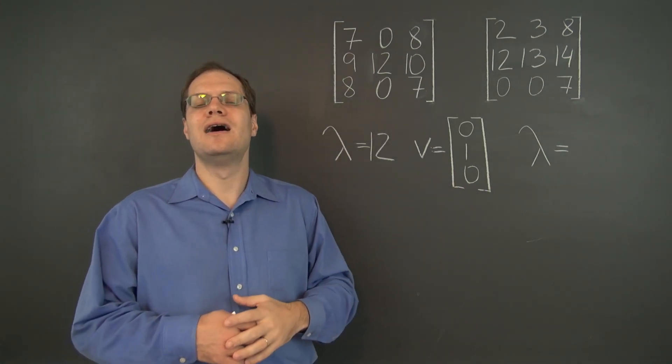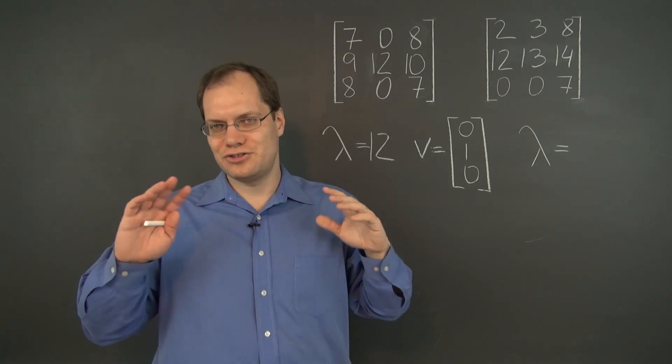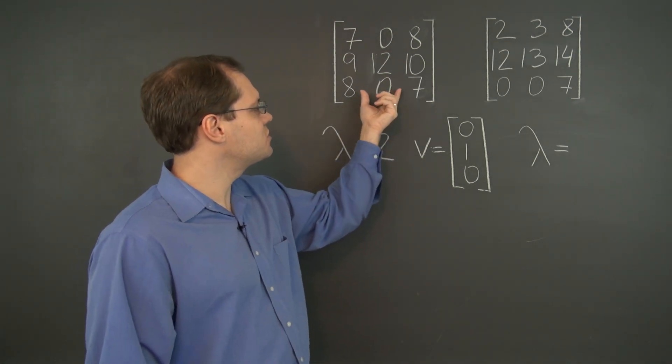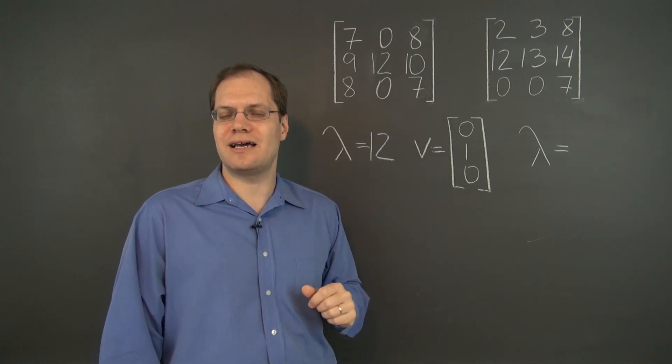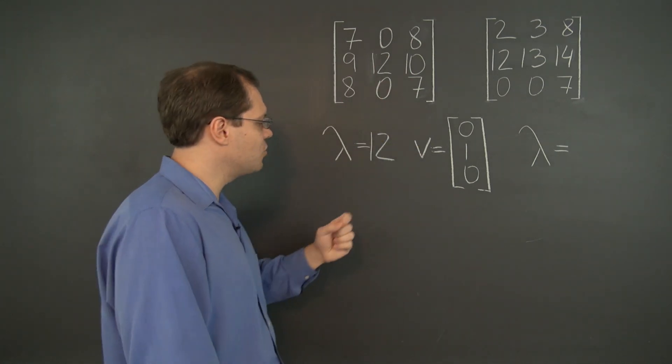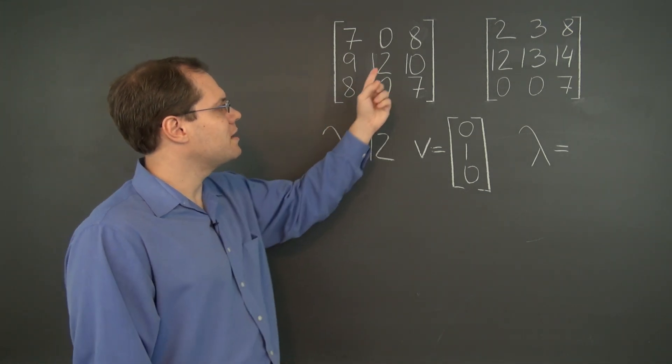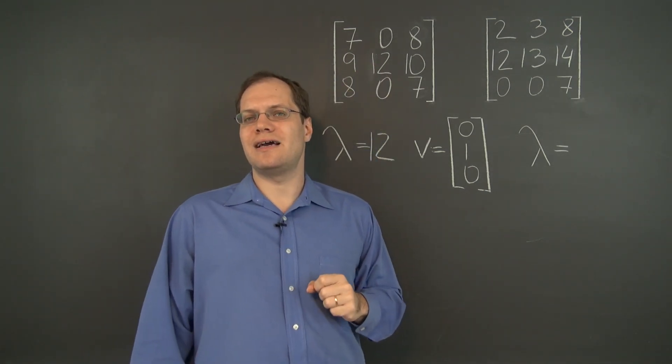So whenever you have a matrix, no matter how full of values that you don't care about it is, if you just pick out one column in which the non-zero entry appears on the diagonal, that tells you an eigenvector and the corresponding eigenvalue. And it has to be on the diagonal.